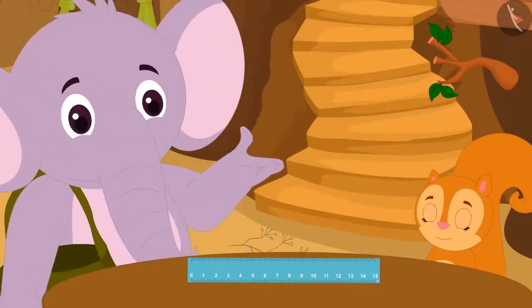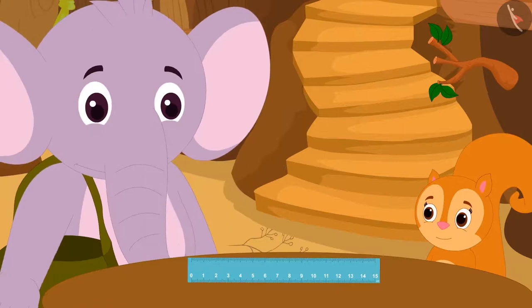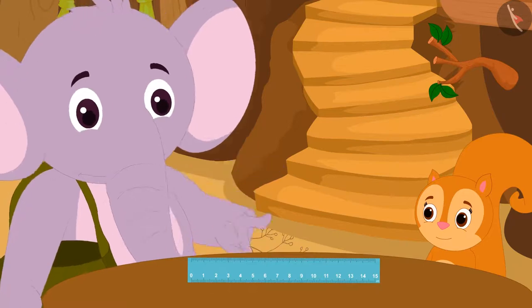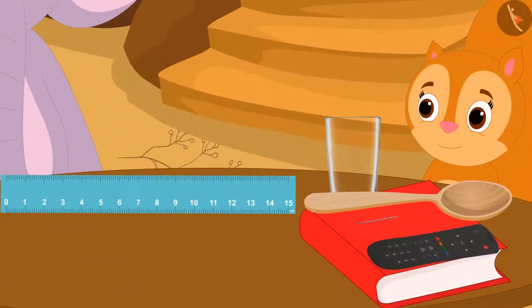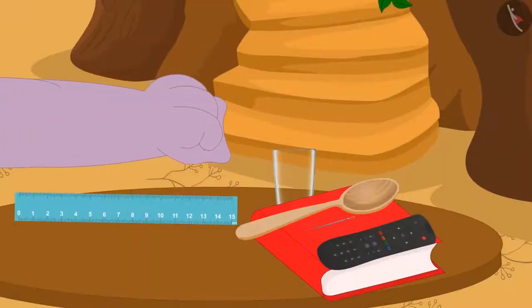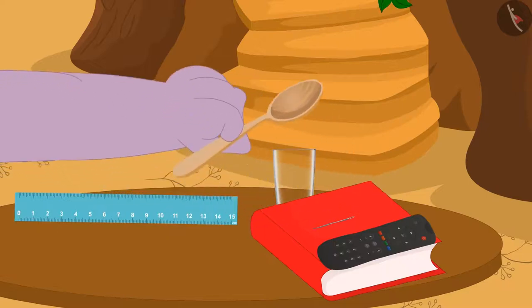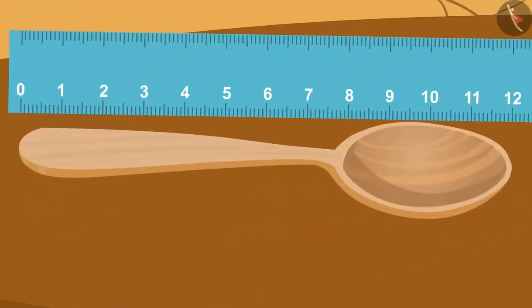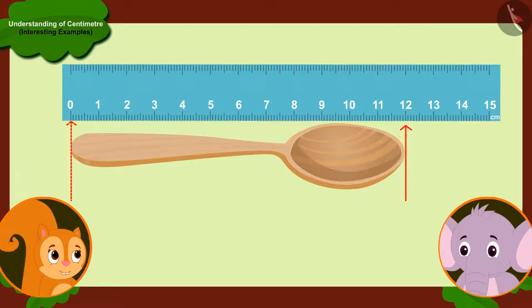Appu then asked Chanda to collect some items from her house whose length she wanted to measure. Chanda immediately collected those items and brought them. Appu first picked up a spoon of Chanda. He placed the spoon next to the ruler in this way and said, look, your spoon is 12 centimeters long.